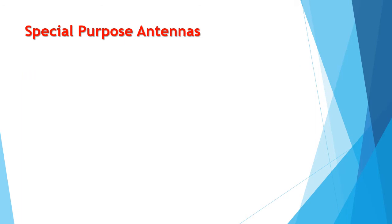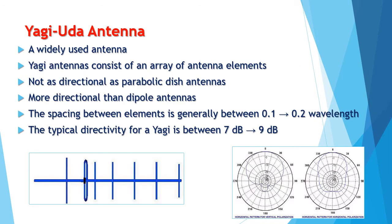Special Purpose Antennas. Here we have the Yagi-Uda antenna — a widely used antenna that commonly uses a folded dipole as a driven element. Yagi antennas consist of an array of independent antenna elements. This is not as directional as a parabolic dish antenna, but more directional than dipole antennas. The spacing between elements is generally between 0.1 to 0.2 wavelengths. The typical directivity for a Yagi is between 7 to 9 decibels, depending upon the number of parasitic elements added.